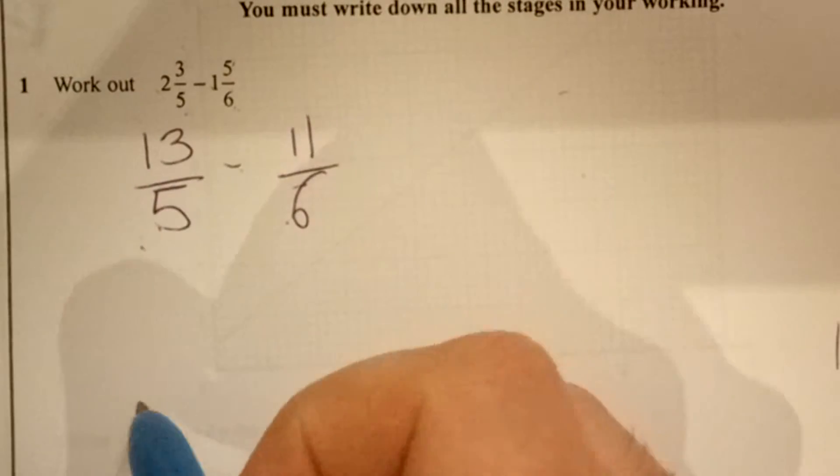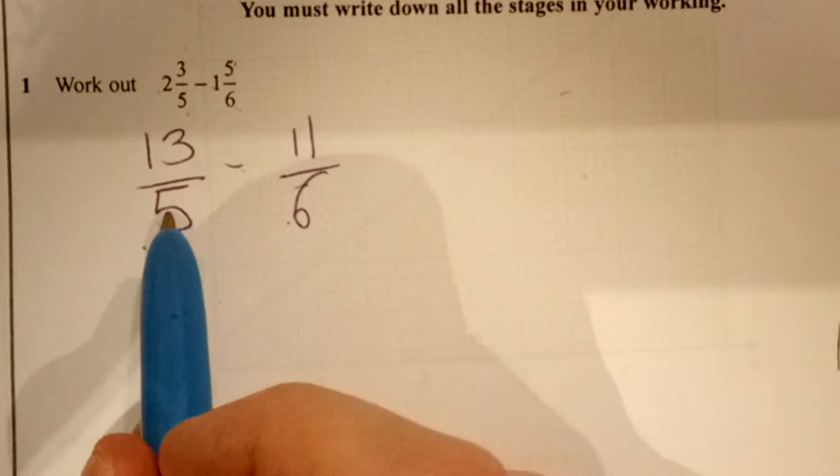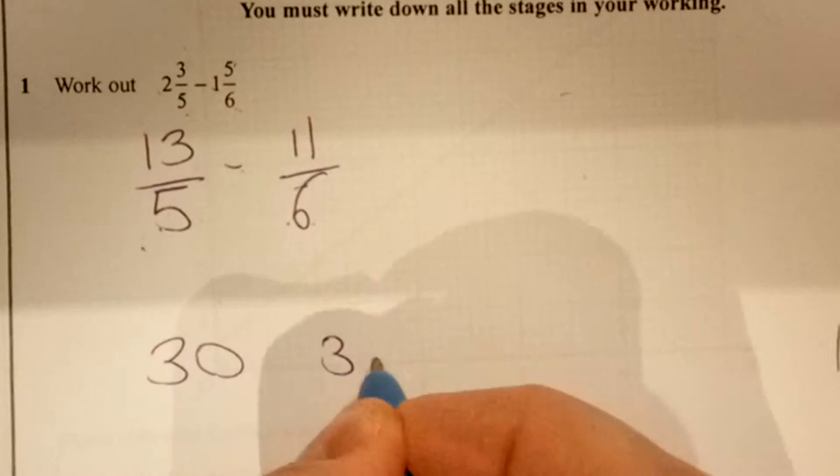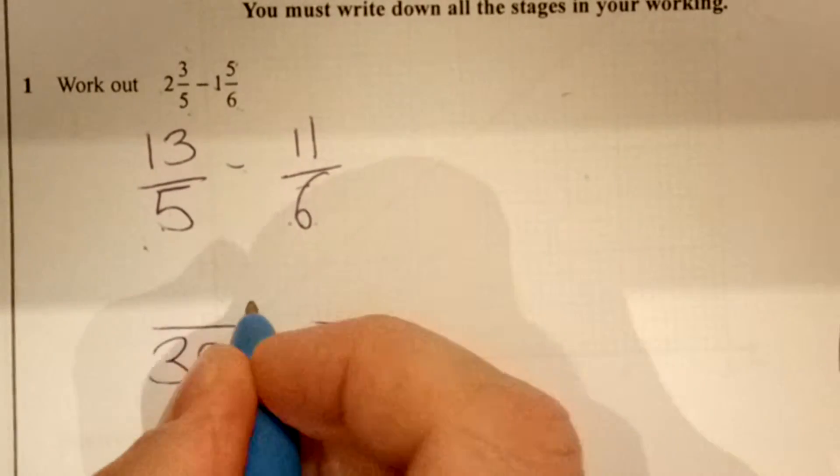denominators, so you've got to think about what is the lowest common multiple of 5 and 6. That happens to be 30, so we need two fractions which have got 30 as a denominator.